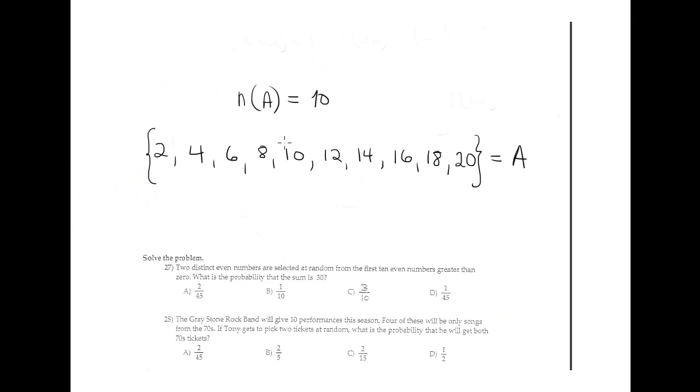Number 27: Two distinct even numbers are selected at random from the first 10 even numbers greater than zero. What is the probability the sum is 30? Our sample space is the first 10 even numbers: 2, 4, 6, 8, 10, 12, 14, 16, 18, 20. The cardinality is 10. This is the sample space.